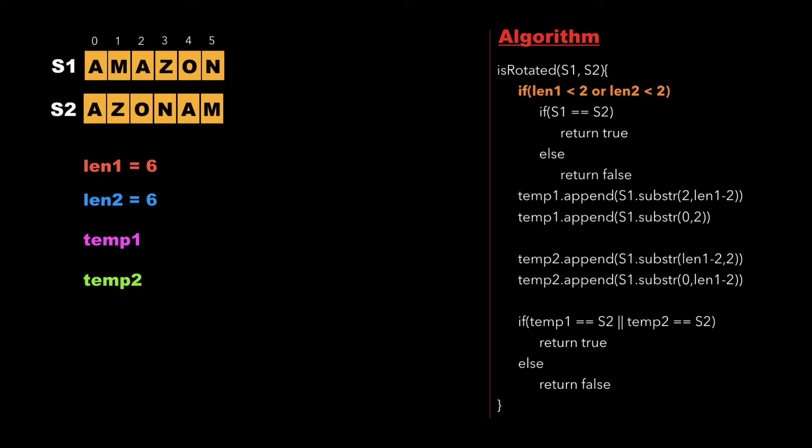So initially we check whether either the length of string s1 or s2 is less than 2. If so then we check whether both the strings are equal. If they are equal then we return true else we return false.